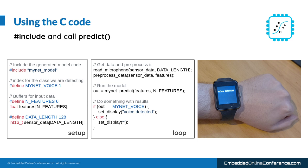In order to use the C code you include the generated header file and then you pass the data to the predict function of the model. The output can then be used to trigger relevant actions such as controlling motors, logging of any events, or sending this data to an external system. In this example we just show the model output on a display.